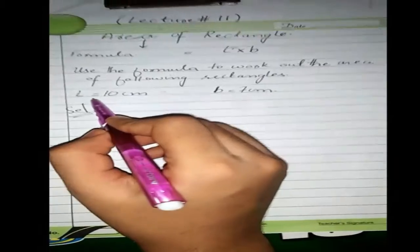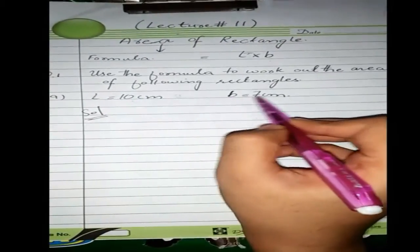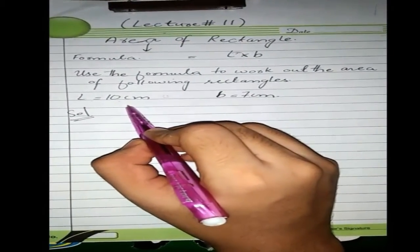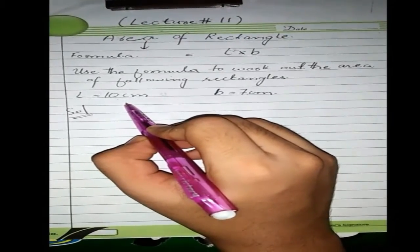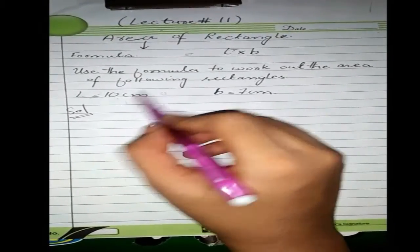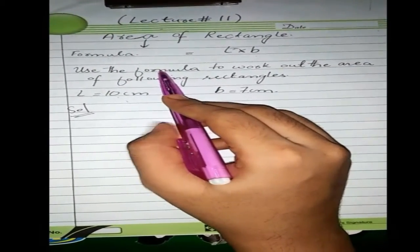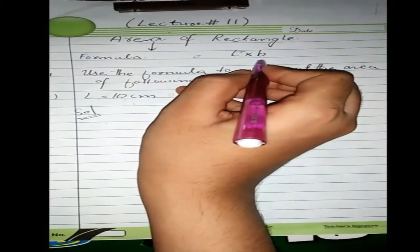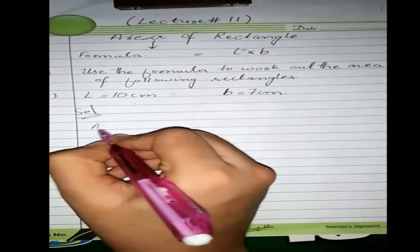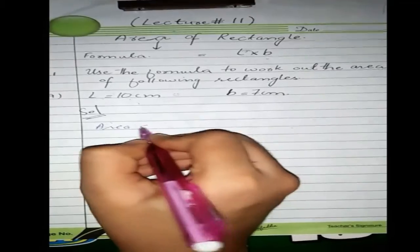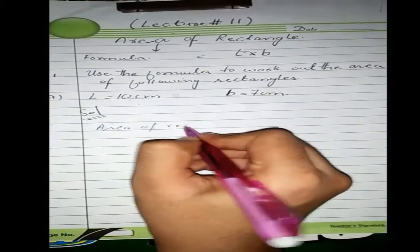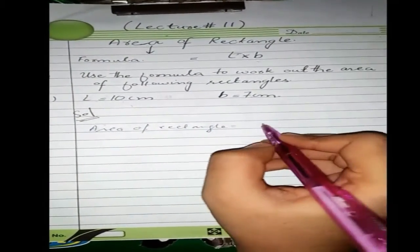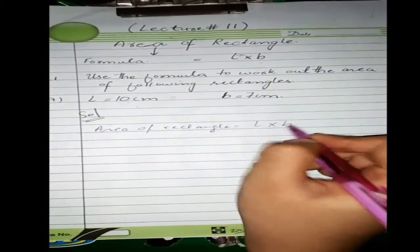Now we have a rectangle. Use the formula to work out the area of the following rectangle. If there is a rectangle with length 10 cm and breadth 7 cm, then you will find the area of the rectangle. We will write the formula. Area of rectangle is equal to length multiplied by breadth.